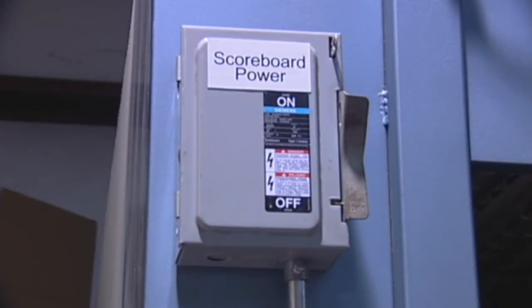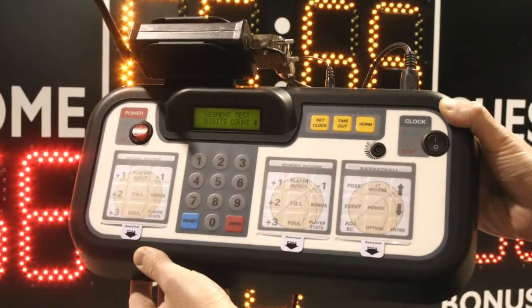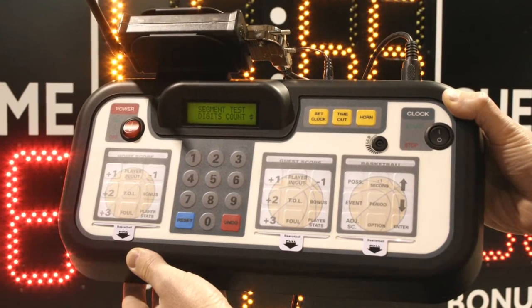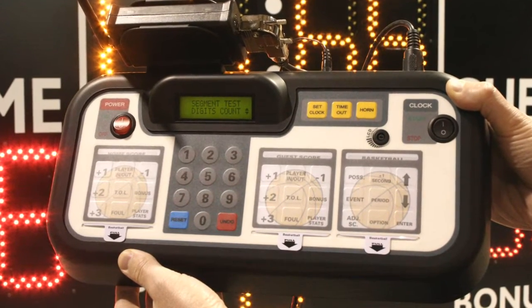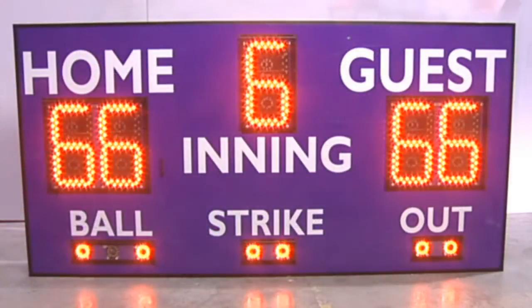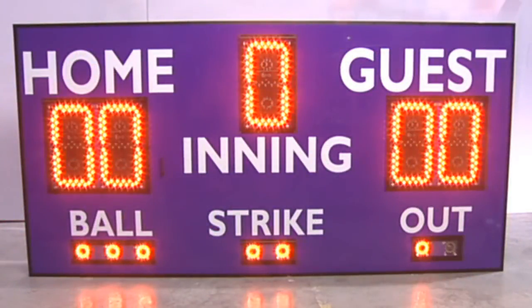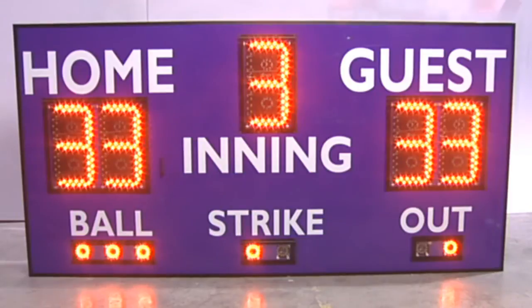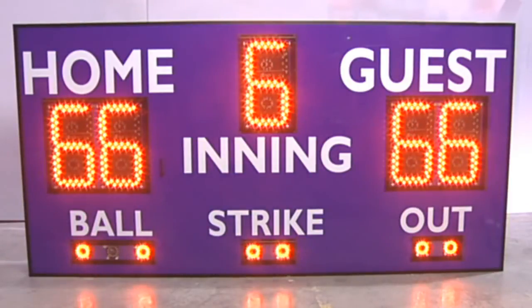Next, turn on the power to the scoreboard. Use the controller to test the scoreboard to be sure all of the digits and the horn are working correctly. When the board is completely operational and you have tested all of the functions and features on your scoreboard, you have successfully completed the digit replacement.